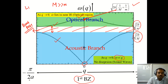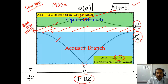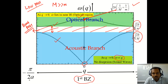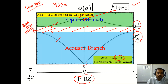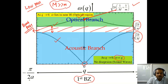In contrast, the one-dimensional monoatomic chain acts as a low-pass filter, allowing frequencies only below a certain cutoff ω_max and blocking all higher frequencies. The diatomic system allows transmission in a particular frequency band. As the mass difference between the two atoms increases, the gap between the optical and acoustic branches grows wider.